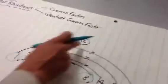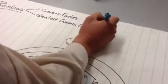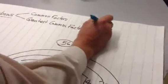So the common factors of 48 and 56 are 1, 2, 4, and 8.